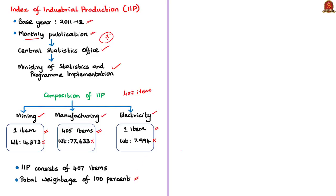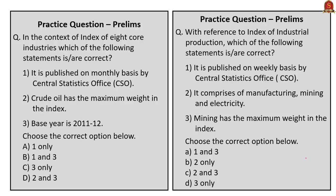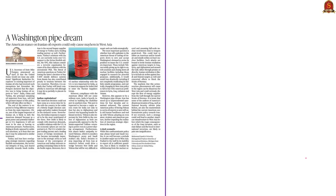The importance of both indices: first, they act as lead indicators for industrial performance and general economic activity in a particular month. Second, they serve as sources for policy making — for various ministries, especially the Ministry of Finance, and for agencies like the RBI. Finally, they also aid policy decisions in private companies and help investors and policy analysts forecast the country's future economic performance. With this, we come to the end of this news article. Have a look at the practice prelims questions to be discussed at the end of the session.